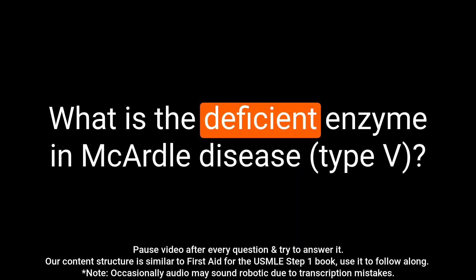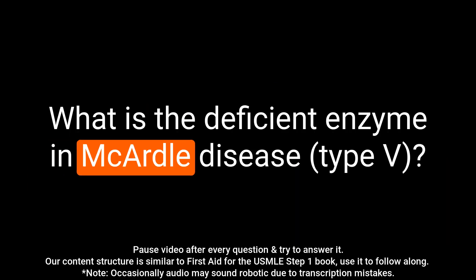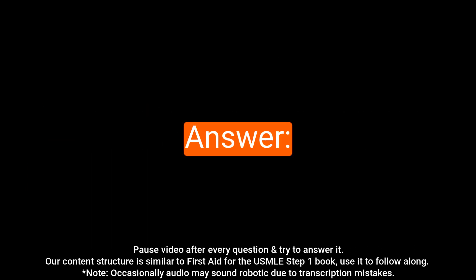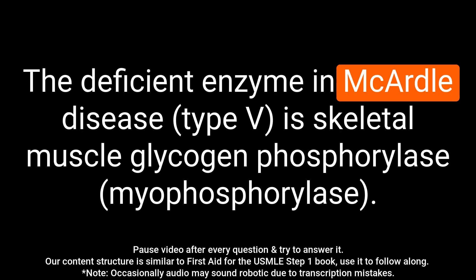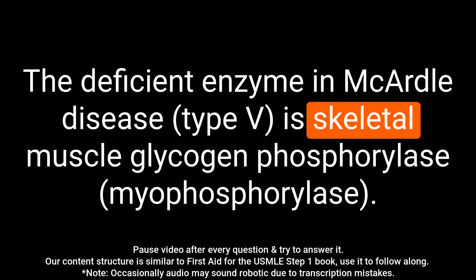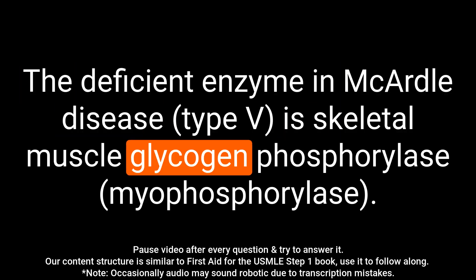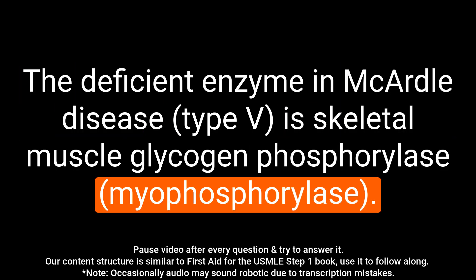Question: What is the deficient enzyme in McArdle disease? Answer: The deficient enzyme in McArdle disease is skeletal muscle glycogen phosphorylase.